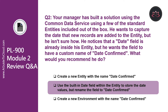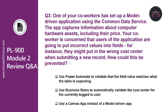Let's look at question number three. One of your co-workers has set up a model-driven application using the Common Data Service. The app captures information about computer hardware assets, including their price. Your co-worker is concerned that users of the application are going to put incorrect values into the fields — for instance, they might put in the wrong cost number when submitting a new record. How could this be prevented?